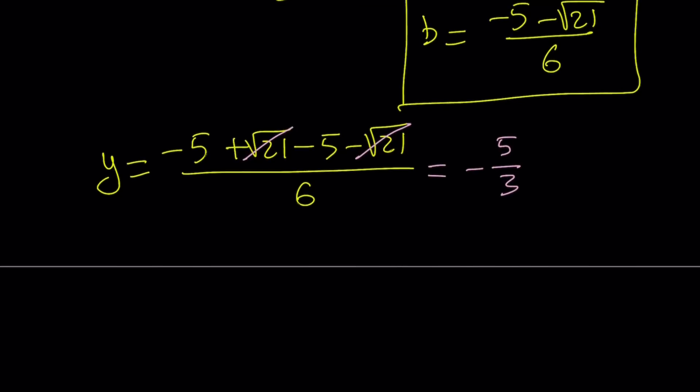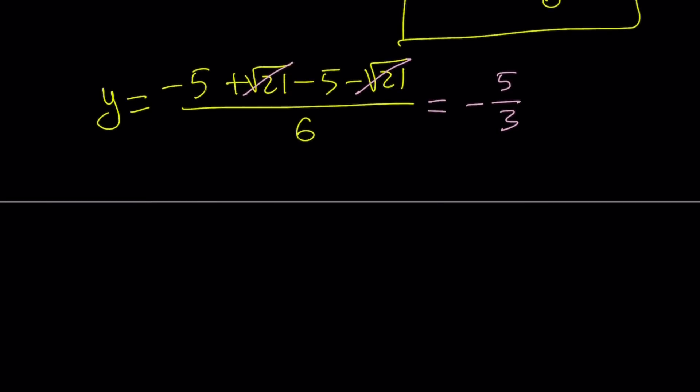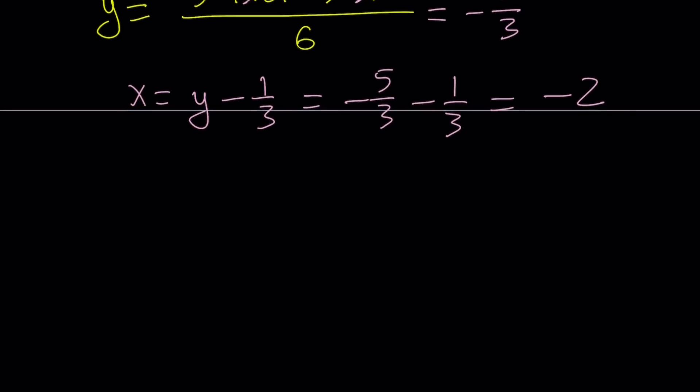After all these complications, we get a nice, somewhat nice value for y. But what is the relationship between x and y? x can be written as y minus 1 third. Remember? If you replace y with negative 5 thirds, you get negative 6 thirds, which can be written as negative 2. x is equal to negative 2. Beautiful.